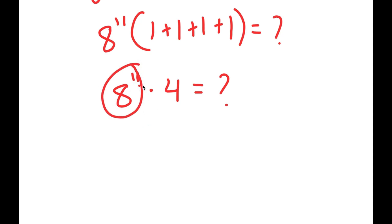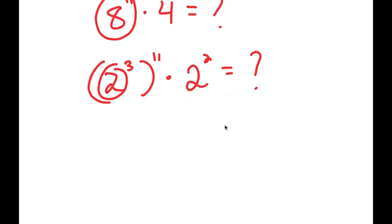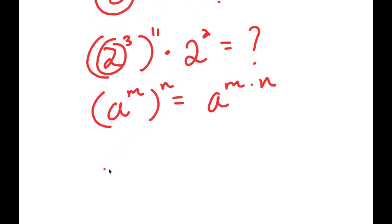From here, I can rewrite 8 to the power of 11 as 2 to the power of 3 to the power of 11 — all I did was rewrite 8 as 2 to the power of 3. And 4 can also be rewritten as 2 squared. Now, using the property that a to the power of m to the power of n equals a to the power of m times n, I get 2 to the power of 3 to the power of 11, which equals 2 to the power of 33, because 3 times 11 is 33.